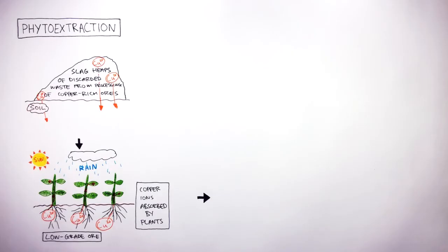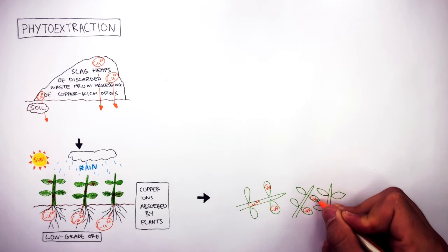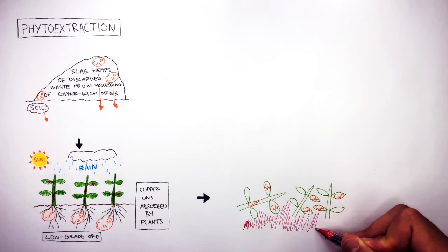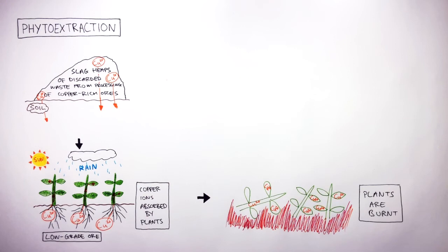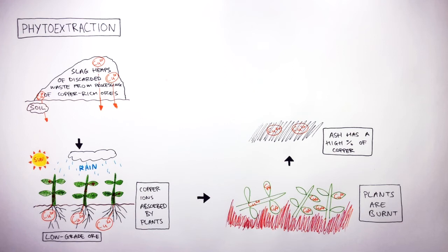In the next stage, the plants are cut and contain copper ions. The plants are then burnt, which can cost a lot of money as it requires very high temperatures. The burning forms ash which is now rich in copper ions. The ash has a high percentage of copper ions, whereas previously the low-grade ore had a low percentage of copper.